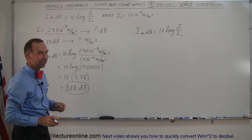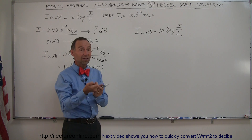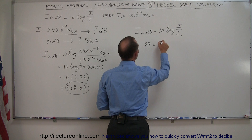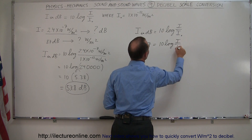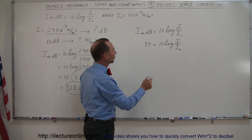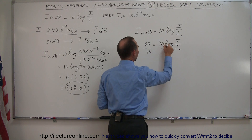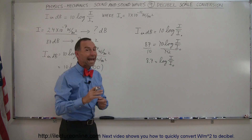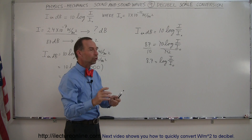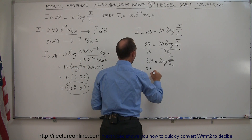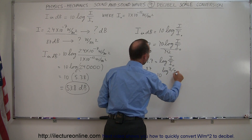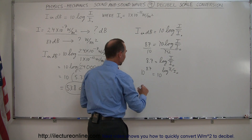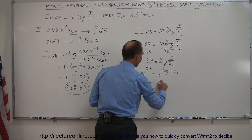We're hearing a sound at 87 decibels — measured with a sound meter that expresses loudness in decibels. So 87 is equal to 10 times the log of I divided by I-sub-nought. We want to get rid of the 10, so we divide both sides by 10. Now we have 8.7 is equal to the log of I divided by I-sub-nought. We take the antilog — we make each side the exponent of 10. So 10 to the 8.7 equals 10 raised to the log of I over I-sub-nought, which negates the log, giving us 10 to the 8.7 equals I divided by I-sub-nought.